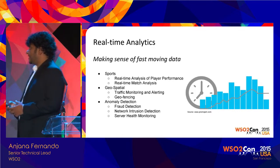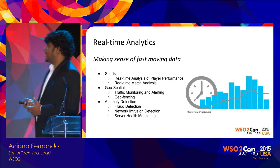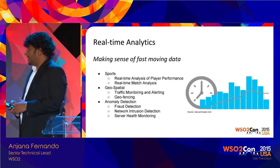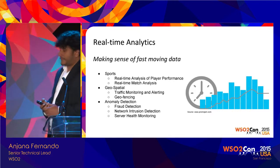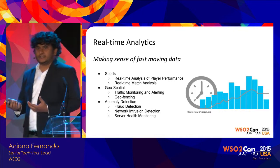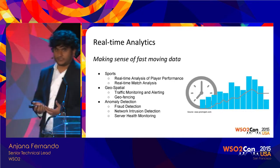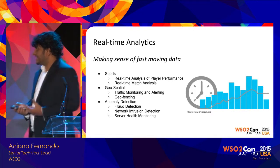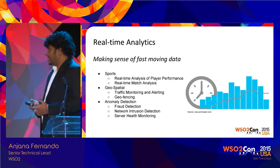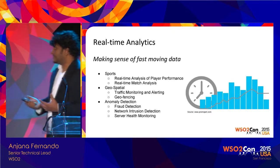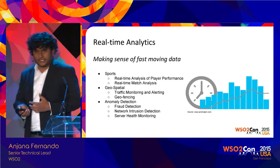Anomaly detection, like fraud detection, is a very popular real-time scenario. These things need to happen in real-time — for example, credit card fraud. You want to see whether some transactions are fraudulent by checking a stream of transactions happening in real-time and coming to a decision. Similarly, network intrusion detection and server health monitoring can be done with real-time analytics.